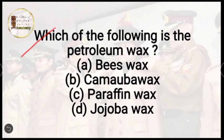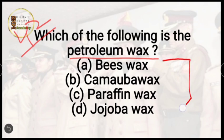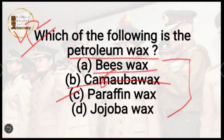Question number 42: which of the following is a petroleum wax? Options are B wax, carnauba wax, paraffin wax, or jojoba wax. The correct answer is option C, paraffin wax.